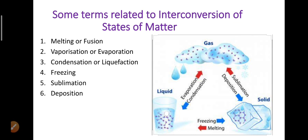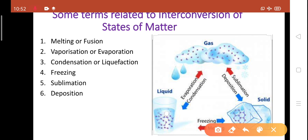Some terms related to interconversion of states of matter. Melting or fusion. It is a process in which solid changes to liquid state on heating at a fixed temperature. And melting point is the fixed temperature at which the solid changes to liquid state. Second is vaporization or evaporation.